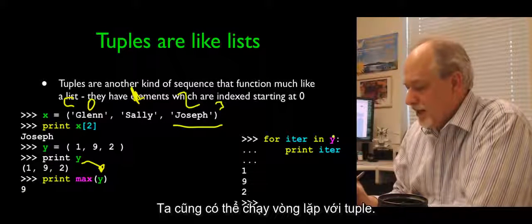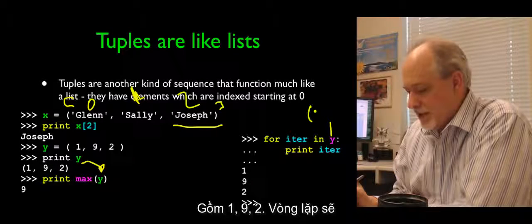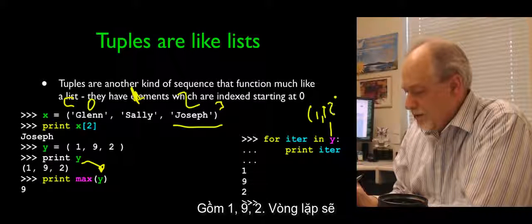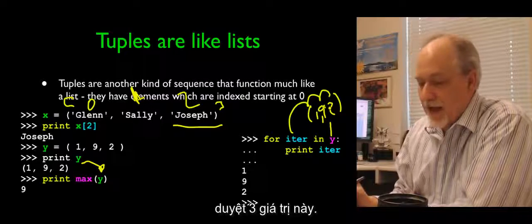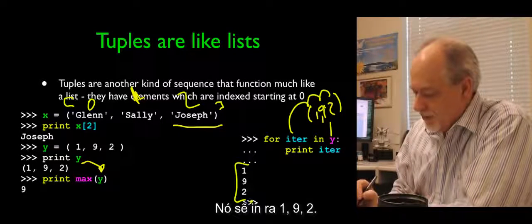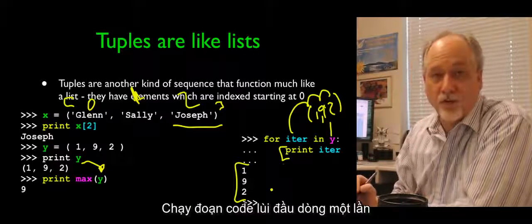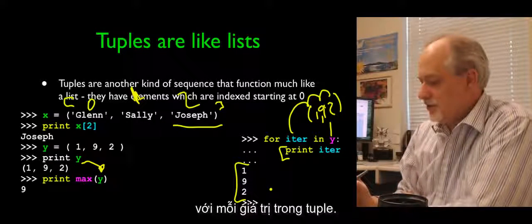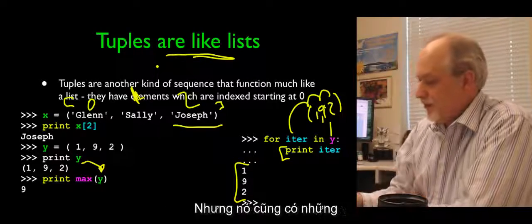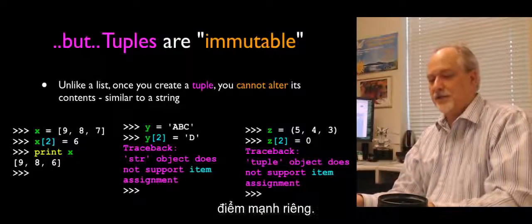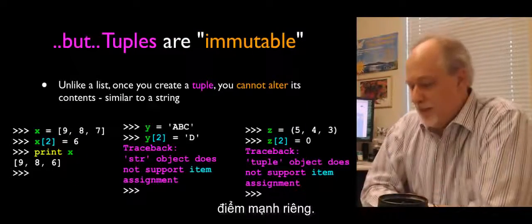And we can loop through them. So here is y, it's a tuple. It's 1, 9, 2. And iteration is going to go through the three values, right? And so it's going to print out 1, 9, 2. It runs the indented code once for each of the values inside the tuple. And so in this respect, they're very much like lists. But they're also different than lists in some real valuable ways.